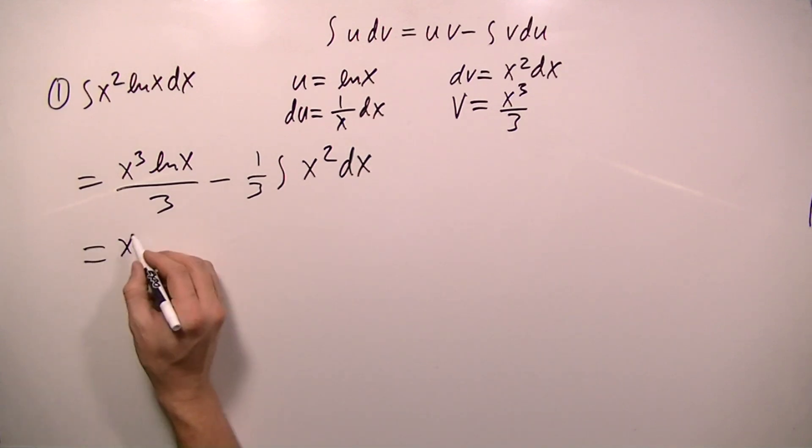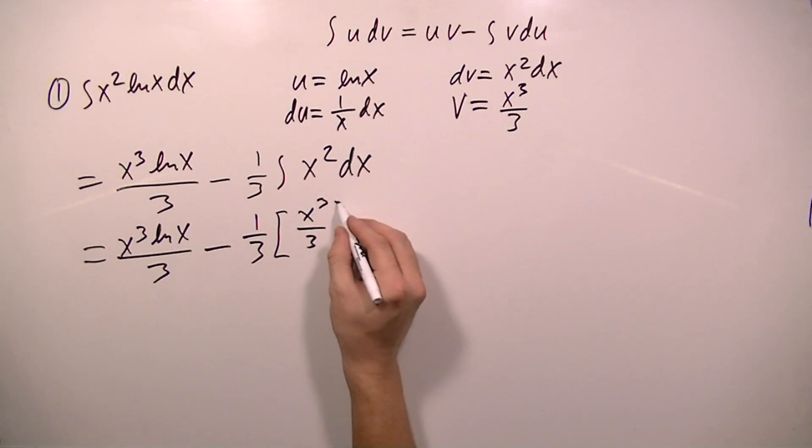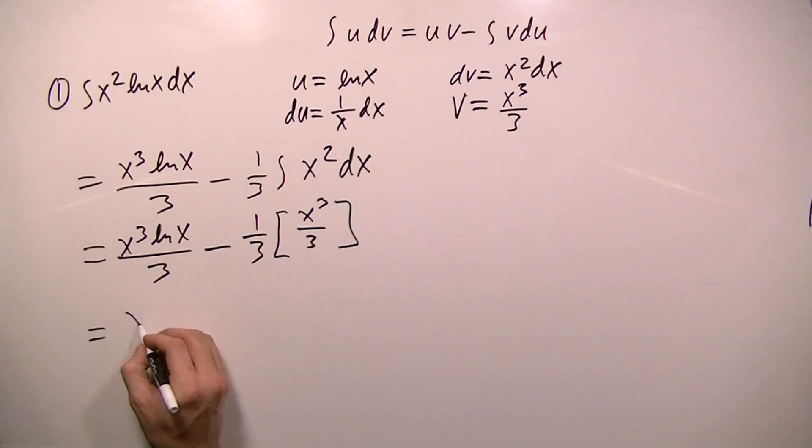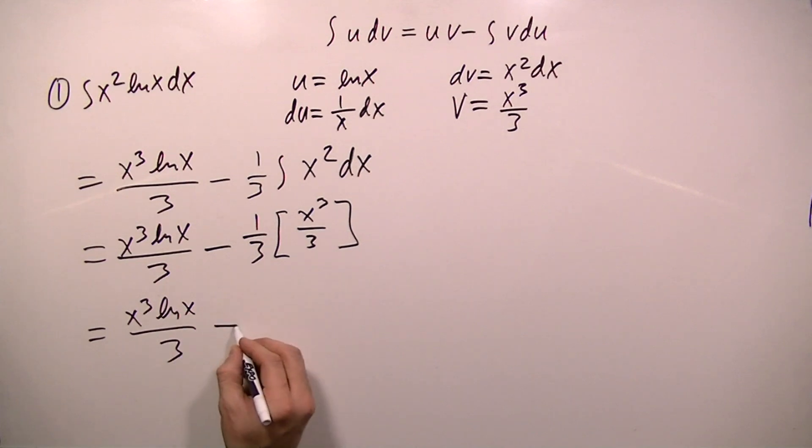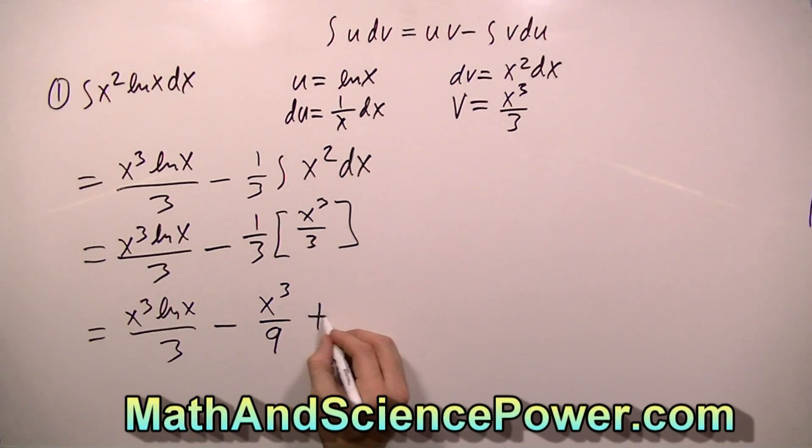Now we just need to rewrite this first part and take this integral. So one third times the integral will be x cubed over 3. One last simplification step: we'll rewrite this as x cubed ln x over 3 minus, and when I multiply the one third in here, I get x cubed over 9. And we can't forget to add c because this is an indefinite integral.